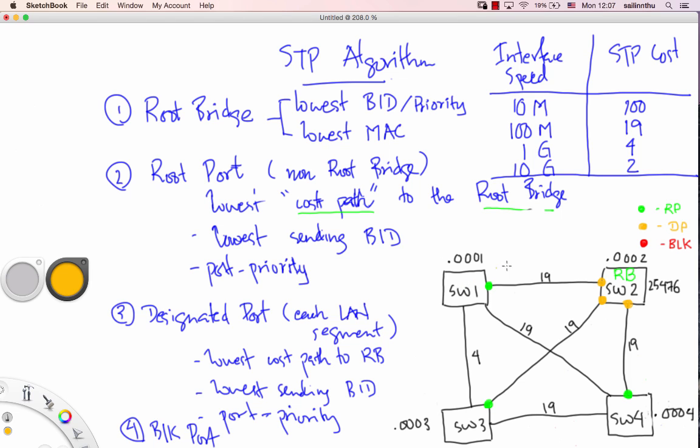And all the other segments, the other segments, don't be a D segment. Switch 1 has D segments. But while only the lowest cost path to the root bridge, Switch 1 to the lowest cost path.